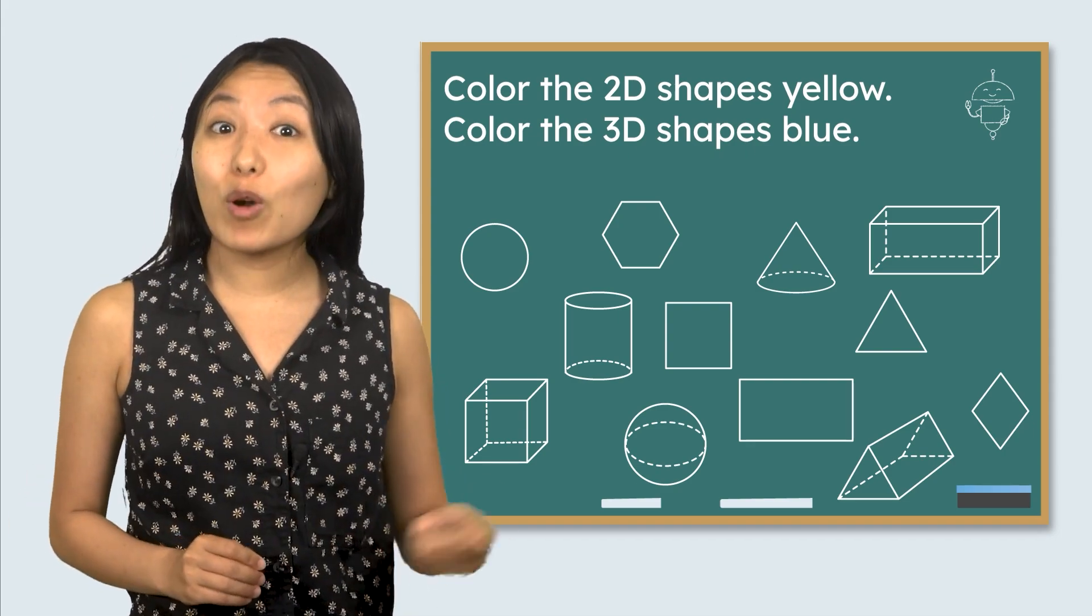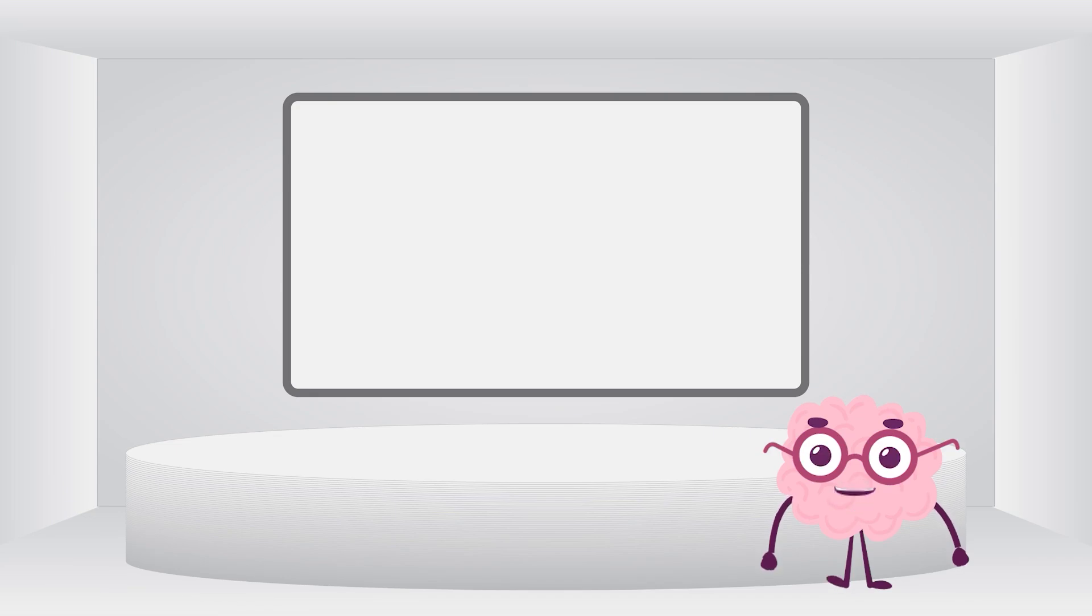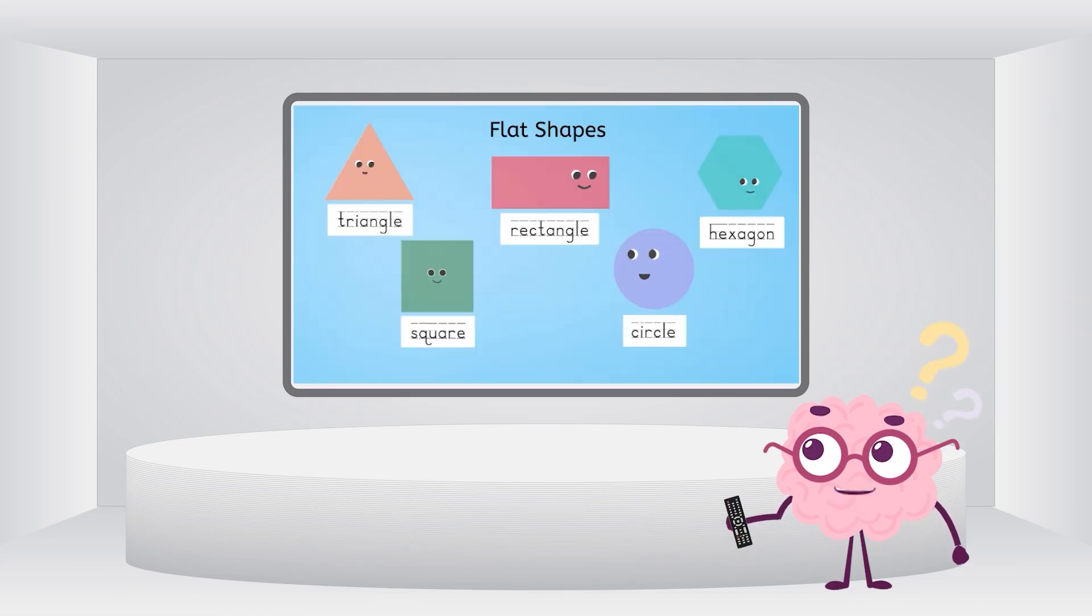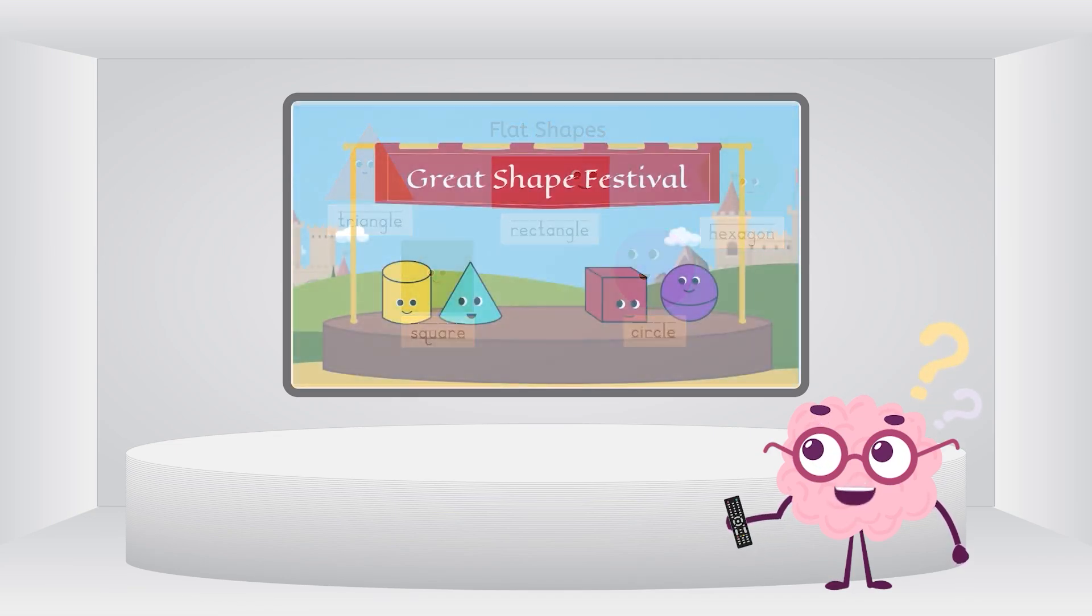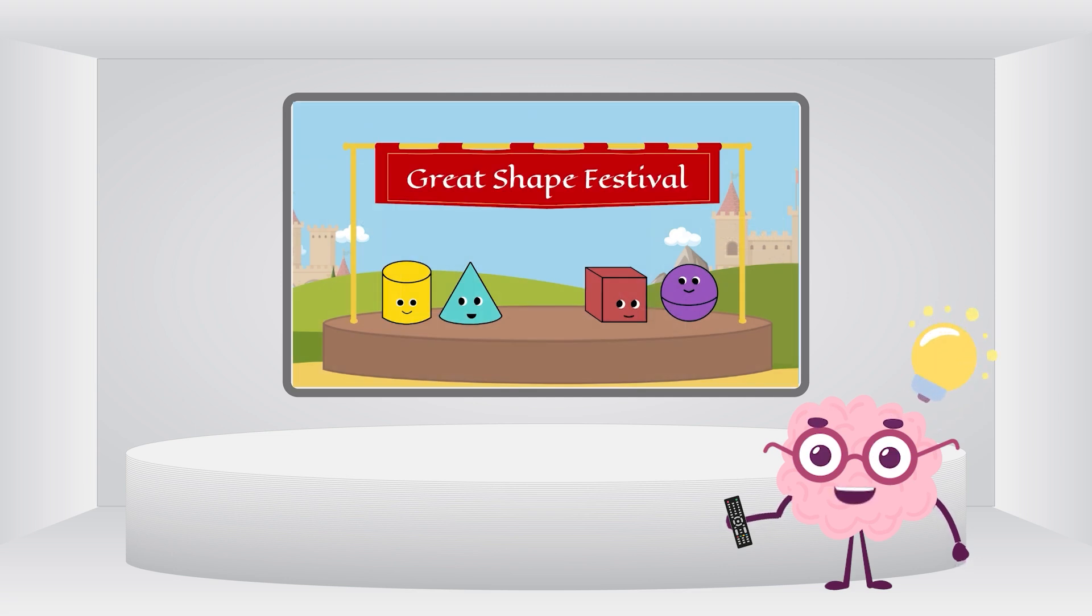Let's think about what we already know. We learned all about shapes before but we called them flat and solid shapes. 2D and 3D must be the new words for the same things. We can start solving this mystery using what we already know.